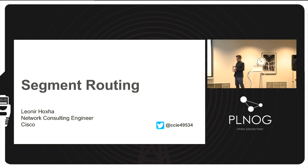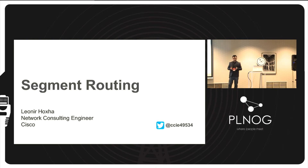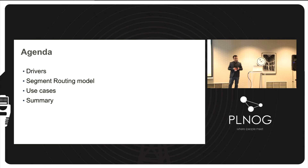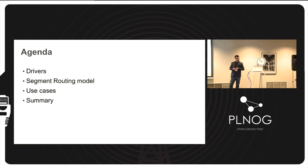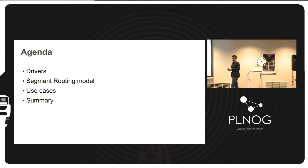There are a couple of reasons why segment routing was born. One of them is simplicity — operators and customers requested that the next generation network infrastructure should be as simple as possible. The second reason is efficiency — it should be as efficient as possible. The third is SDN: segment routing is specifically designed for SDN, so it is a future-ready network infrastructure.